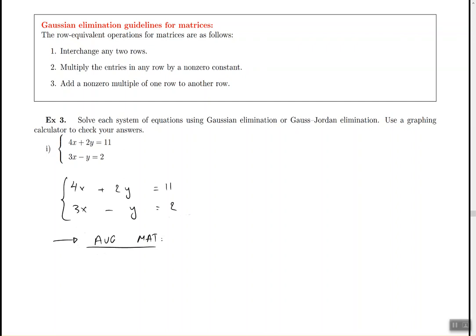So remember, the augmented matrix just takes the numbers: 4, 2, 11. The second row is 3, negative—there's an invisible 1 right there. So keep in mind, invisible 1s matter. And then 2. This is my augmented matrix. The equals were directly before 11 and 2, so I'm going to put the little line right there.